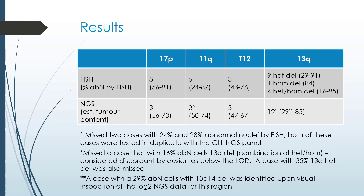This is a summary of our results thus far. We had three patients with a 17p deletion and the abnormal nuclei estimated by FISH ranged from 56 to 81%. We had five patients who had an 11q deletion with percent abnormal nuclei by FISH ranging from 24 to 87%. We had three patients with trisomy 12 and abnormal nuclei by FISH of 43 to 76%. We had a number of patients with 13q deletions: nine with only a heterozygous deletion identified by FISH with abnormal nuclei ranging between 29 and 91%, one homozygous deletion identified at 84%, and four patients with heterozygous/homozygous deletions with estimated abnormal nuclei ranging from 16 to 85%.